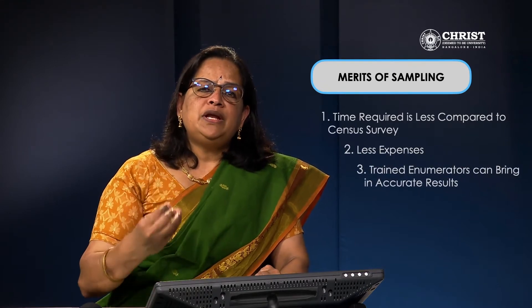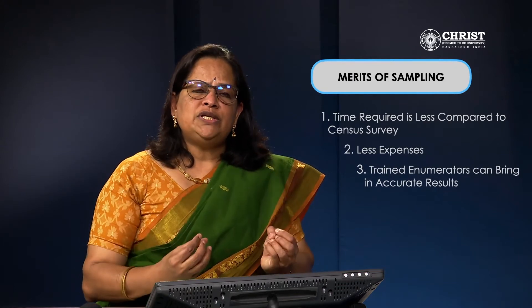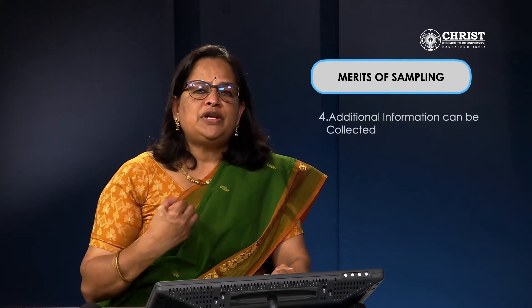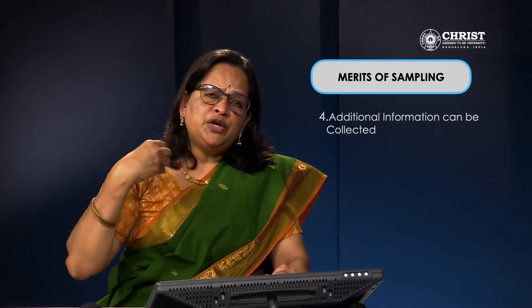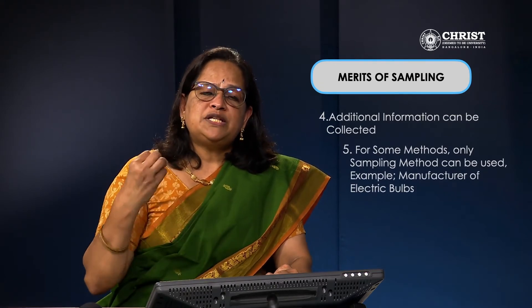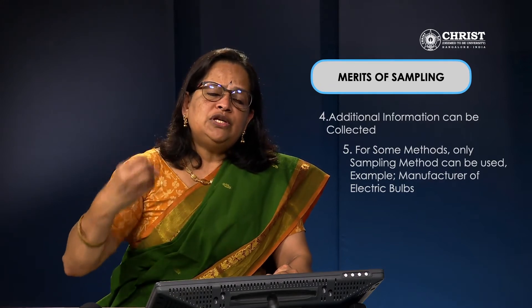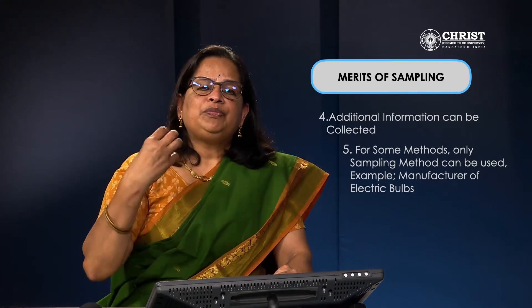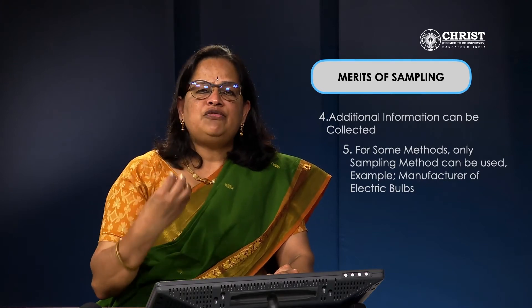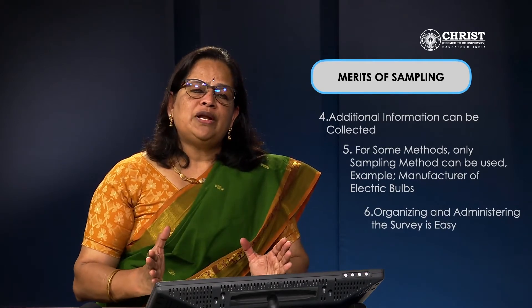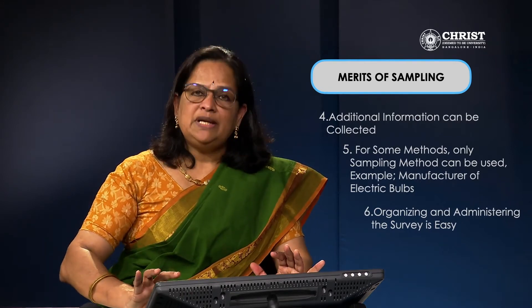Trained enumerators can bring in accurate results — if going for an extensive survey, enumerators are trained accordingly to collect information accurately. Additional information can also be collected, as properly trained enumerators can gather valuable insights for the research. For some methods, only sampling can be used — for instance, testing the life of electric bulbs means you cannot test every bulb, so sampling is used. Organizing and administering the sample survey is also easy, with proper division of labor applicable.